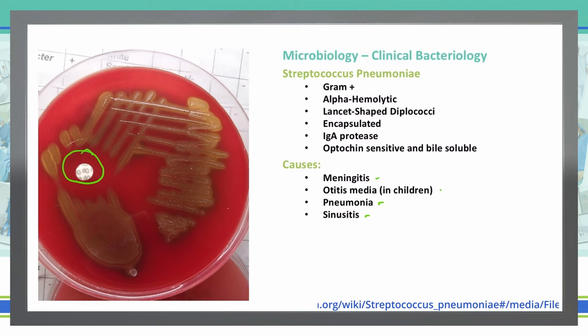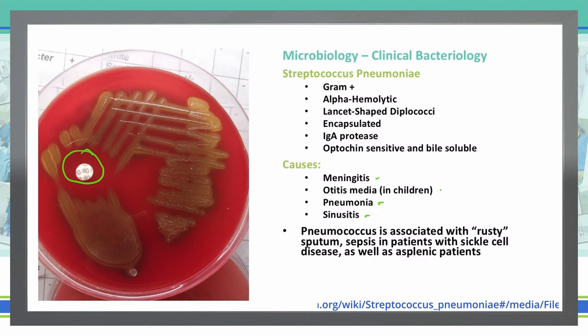Something to remember regarding Streptococcus pneumoniae is that it produces rusty-colored sputum, and it is also present in sepsis in sickle cell patients as well as those who don't have a spleen. Sickle cell patients often lack a spleen due to autosplenectomy.